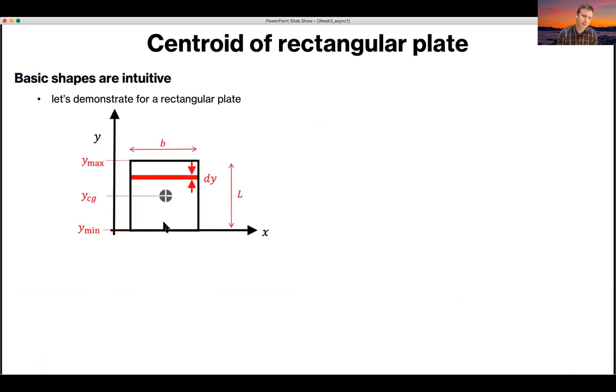So to start with, for a rectangular plate, we define our x and y-axis like this, and at the moment, this plate sits on the line y equals zero, the x-axis. It has a height of L and a width of B, and we can already see intuitively where the center of gravity is, but we're going to apply this method so that we see how it works.